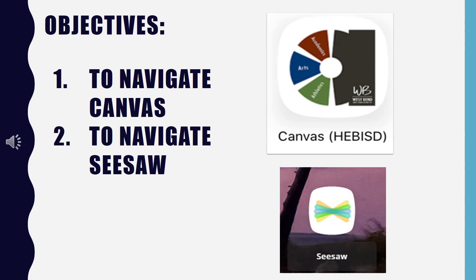We have two relatively simple objectives for today's presentation. Number one is to navigate Canvas and number two is to navigate Seesaw. The picture in the upper right corner shows the icon for Canvas, and at the center bottom of the slide you see the icon for Seesaw.